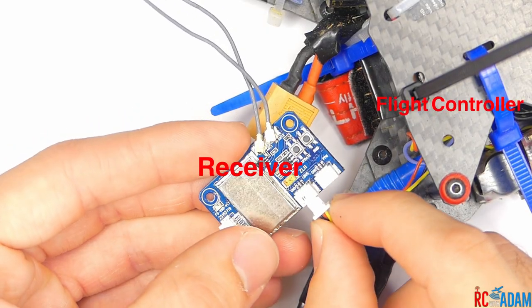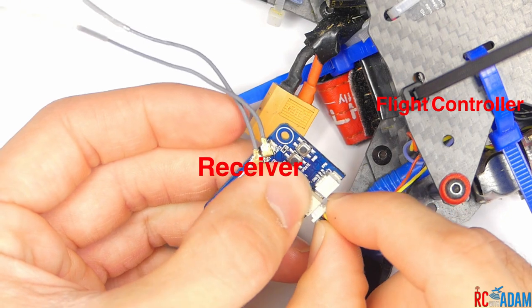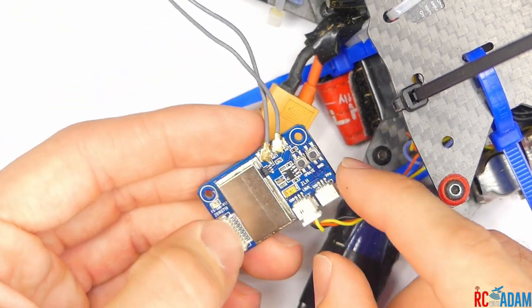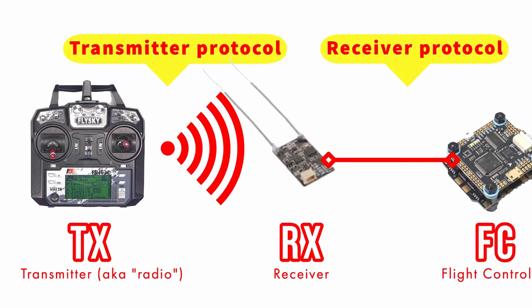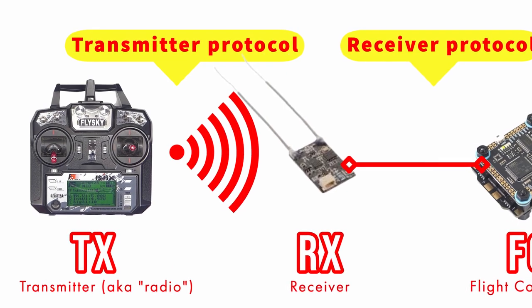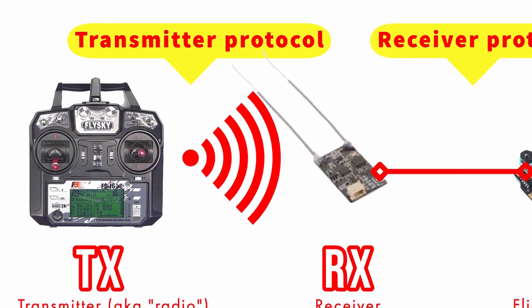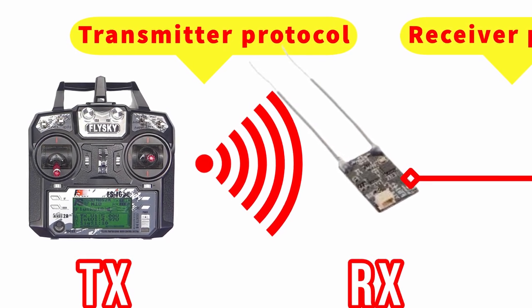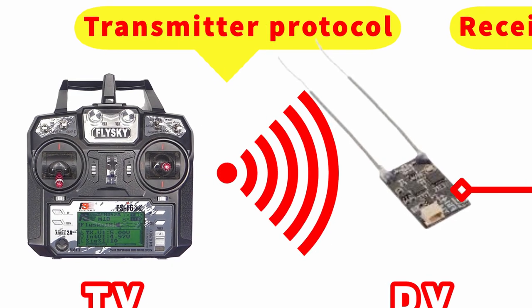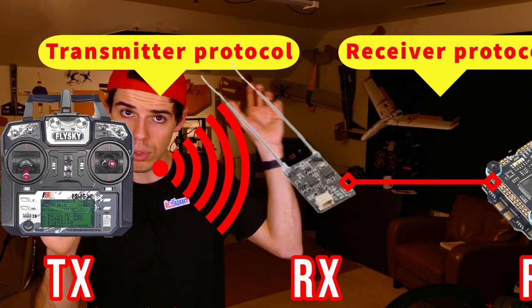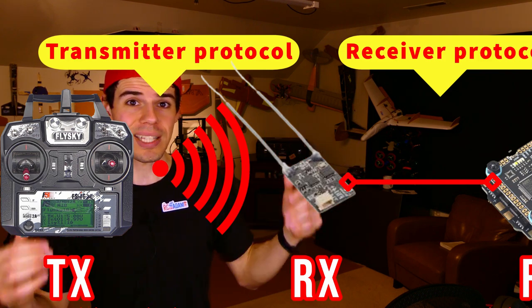Here's a very important thing to point out: when we say receiver protocol, we're talking about the communication between the receiver and the flight controller — a wired connection. This is not to be confused with the transmitter protocol, which is the wireless connection from your transmitter to your receiver. That's a different thing and will be very brand-specific. For example, FlySky uses AFHDS 2A or AFHDS, and there could be multiple versions within a brand. Generally, your transmitter needs to match up with your receiver, and typically they'll just be of the same brand.